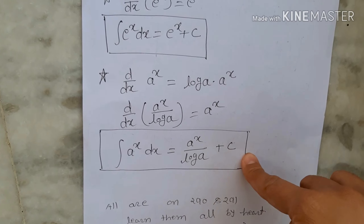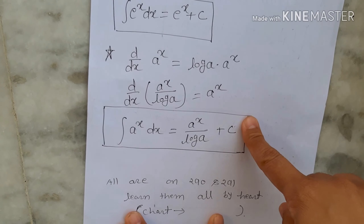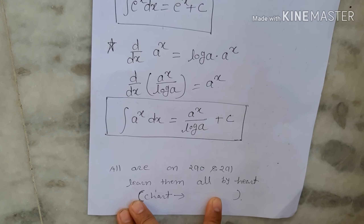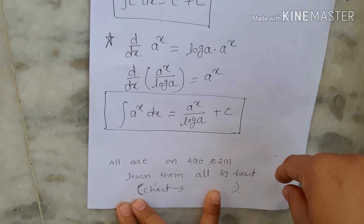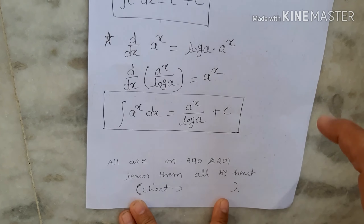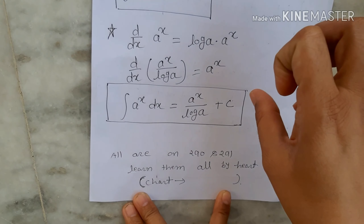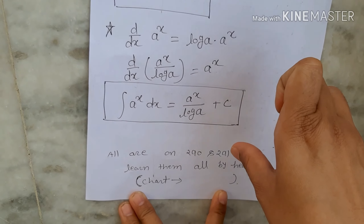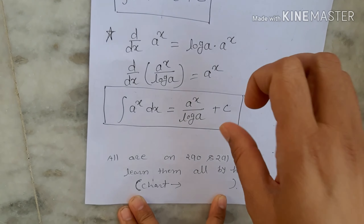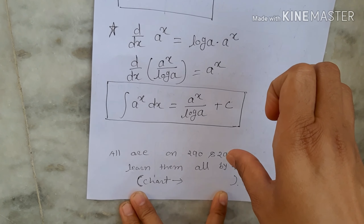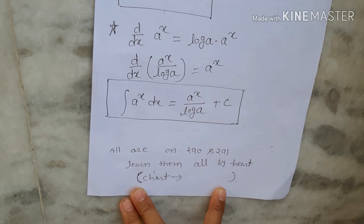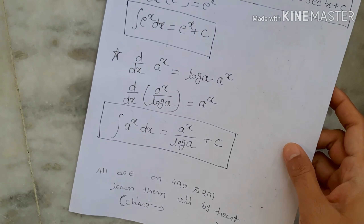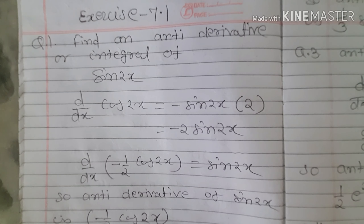What you have to do is note down all the formulas on one page and make a chart. Stick that chart in your study room and every day learn all those formulas. In 4-5 days you will learn them by heart.